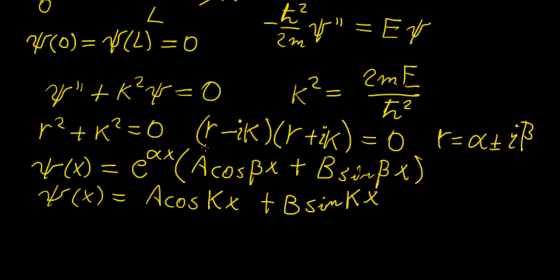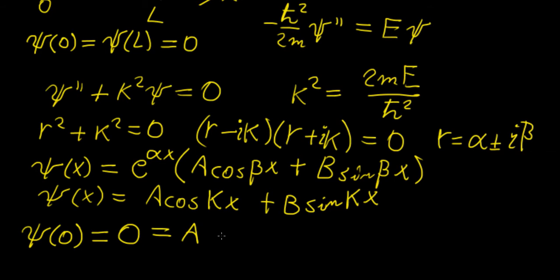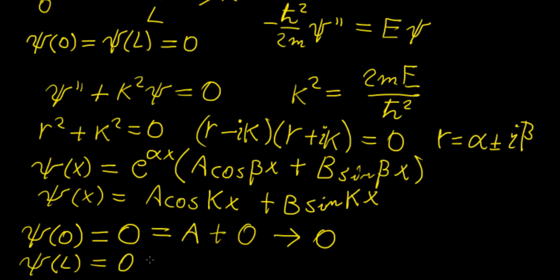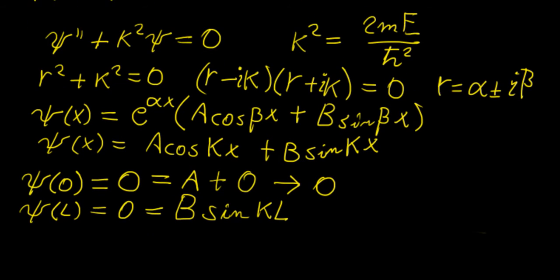To find constants A and B we apply the boundary conditions. Applying ψ(0) = 0: cos(0) = 1 and sin(0) = 0, so A must equal zero. For the second boundary condition, ψ(L) = 0, and since A = 0 we only have B sin(kL) = 0.